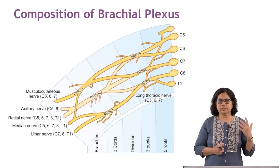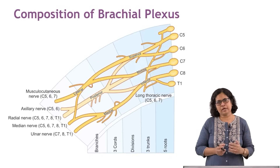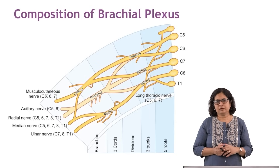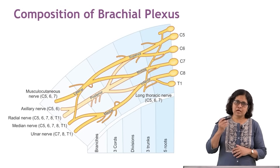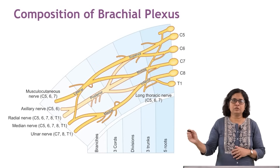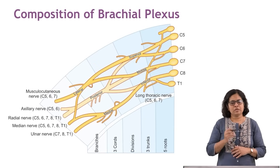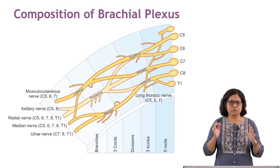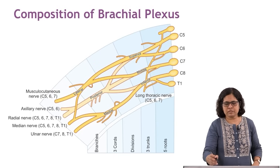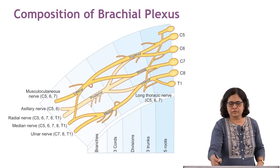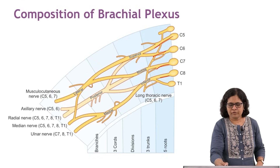This is a short note asked in both theoretical and practical exams. The examiner may also ask you to draw the brachial plexus, so this part you must know very well. The brachial plexus is formed by the ventral rami of the C5 to T1 roots, with occasional input from C4 and T2.